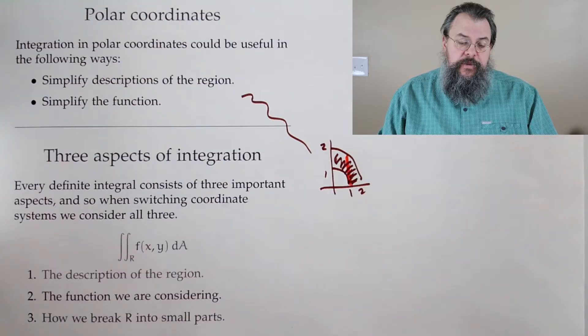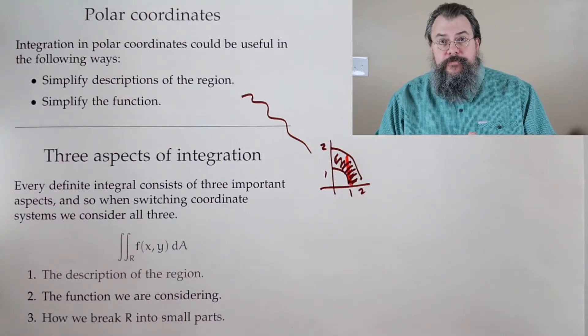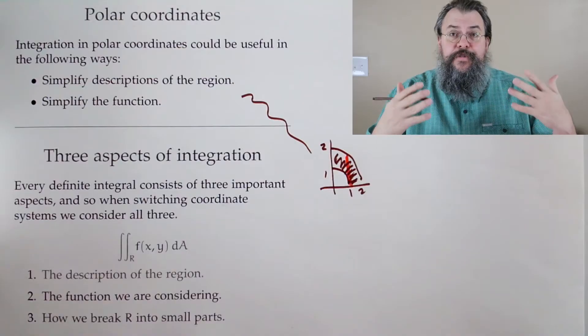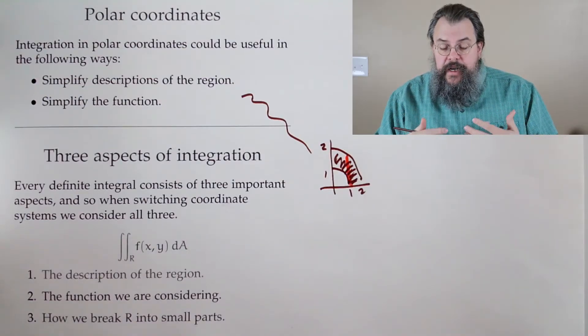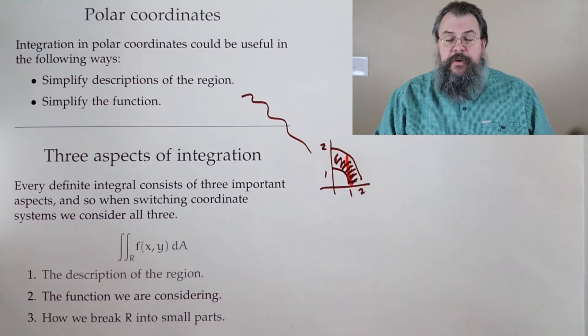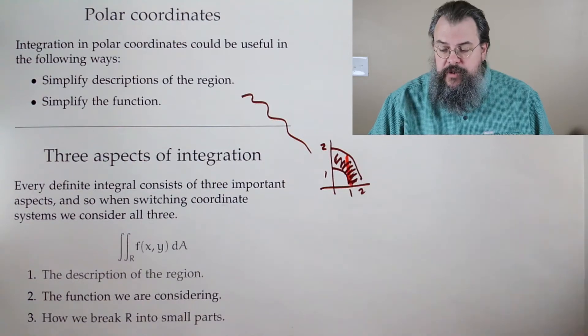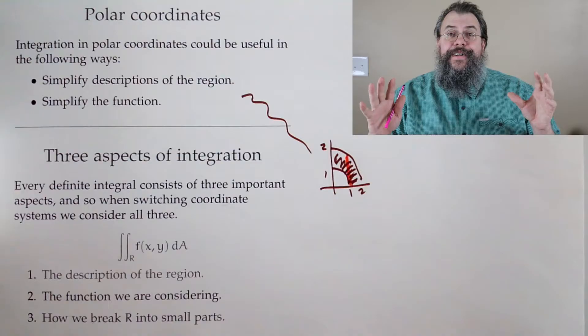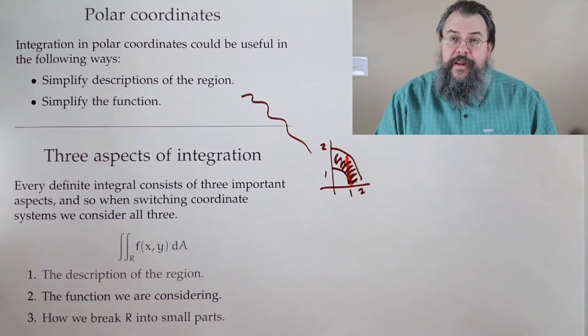So that's one way it can help. It can simplify the description of the region. Now, what about simplifying the function? Well, it might be that the function is expressed in terms of polar, but it can also be the case that maybe you have something which isn't expressed in terms of polar. But when we put it as polar, wow, things get better. Things get a lot nicer.